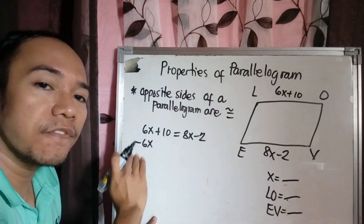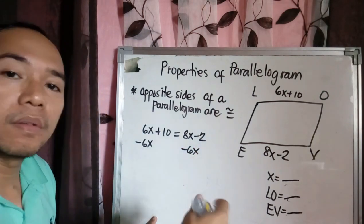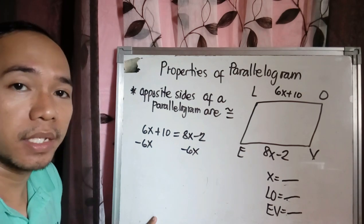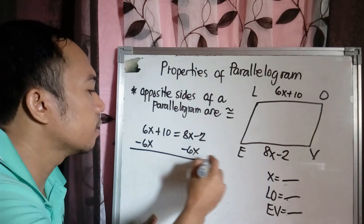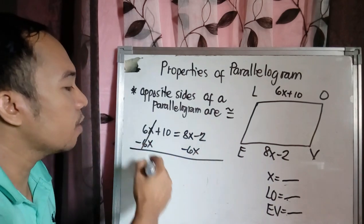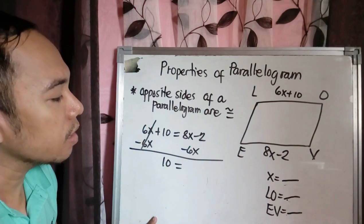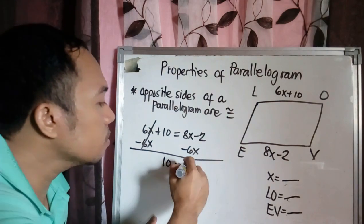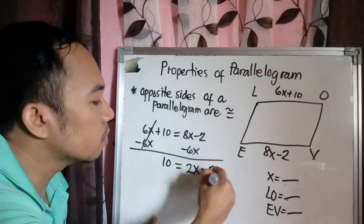So you have here subtraction property of equality. So this is now canceled. So this is 10 equals 8X minus 6X is 2X, then copy negative 2.